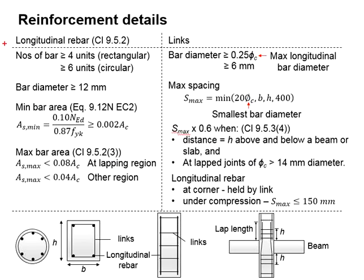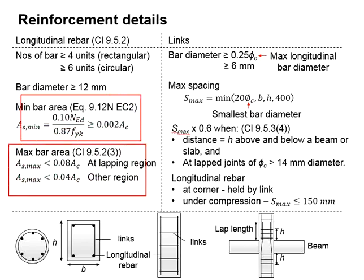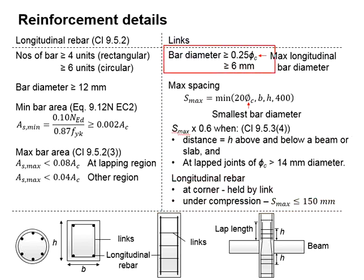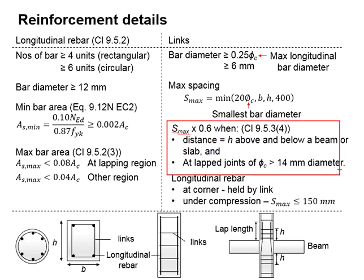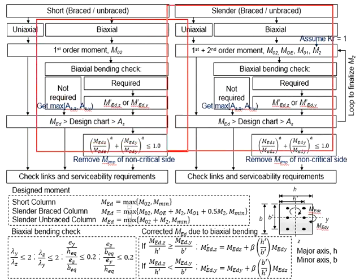Once you have obtained the A_s, then you will proceed with checking the link and the serviceability requirements for the column. Specifically, we are talking about these two sets of requirements. For the longitudinal reinforcement bars, there is a minimum number of reinforcement bars required, minimum size of the reinforcement bar, minimum bar area, and also maximum bar area. In terms of the requirements for the shear links, we have minimum bar size, maximum spacing under normal circumstances, and maximum spacing at the joint region or at the lapping area. The design calculations for the short column is relatively simple as compared to the other types of column.